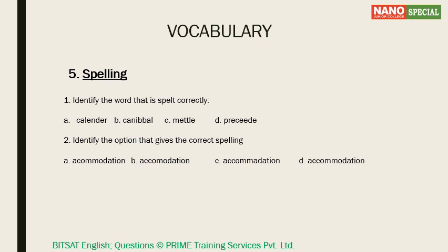Is it 'calendar'? No — the spelling shown has an E where there should be an A. 'Cannibal' has an extra B and one N less — it's actually C-A-N-N-I-B-A-L, meaning a person who eats human flesh. Then 'mettle' — M-E-T-T-L-E — that is the right answer. Mettle means spirit, resilience, ability and determination — 'the team showed its mettle in the finals.' And 'precede' has an extra E — it should be P-R-E-C-E-D-E, meaning something which comes before something else. For example, M.S. Dhoni preceded Kohli as captain of the Indian cricket team.